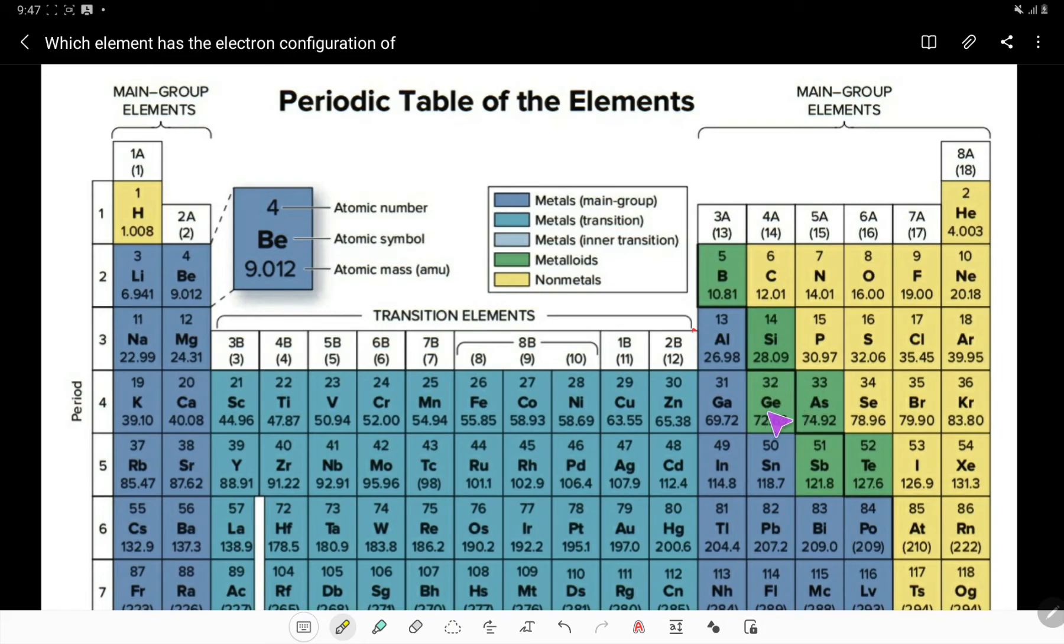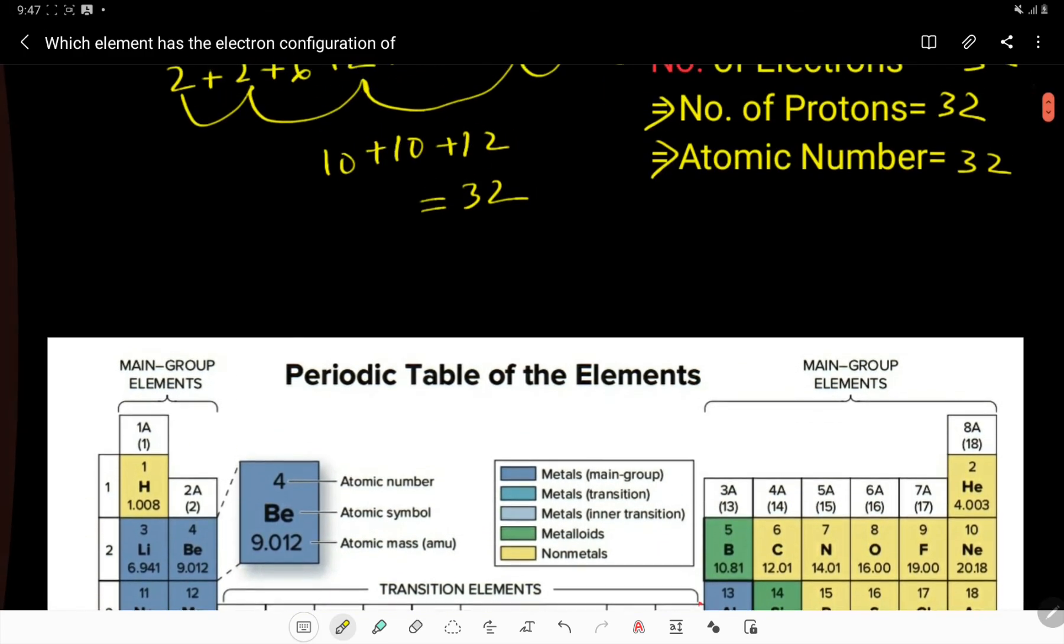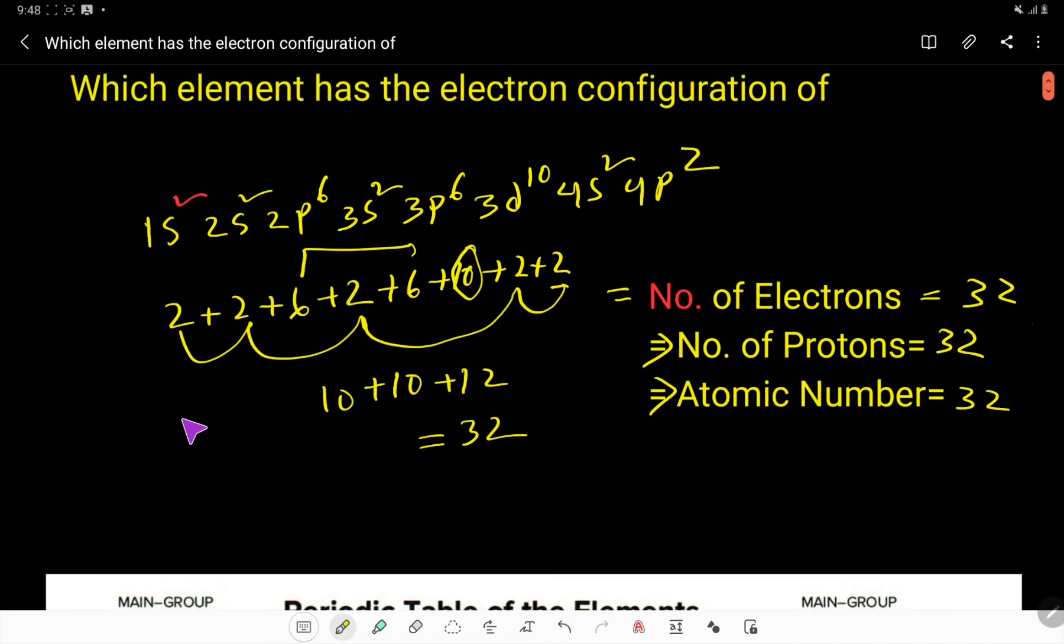So look, here this is germanium. Its atomic number is 32, so this element's symbol will be Ge, germanium.